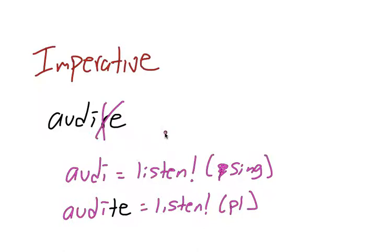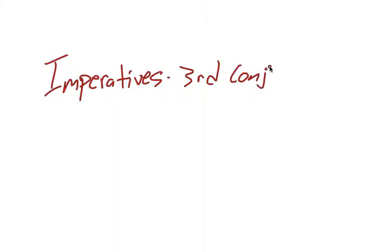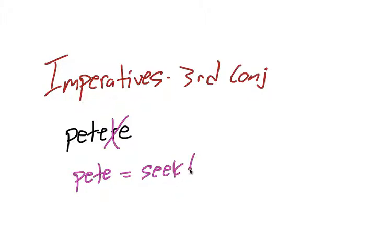We actually, in the last lecture, missed the imperatives for third conjugation, so I want to go over those really quickly. So imperatives, third conjugation. And so let's use peto again, that was our example from the last lecture. So peto, petere, I'm going to take away the re and get pete, which would be seek or ask.